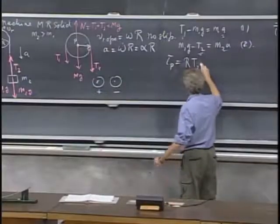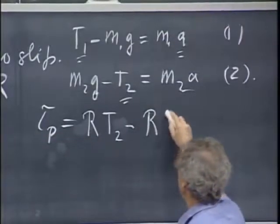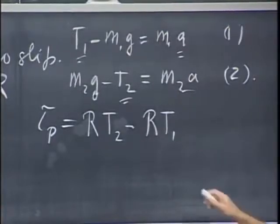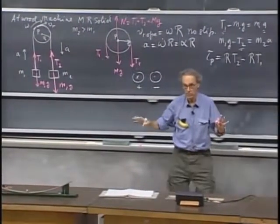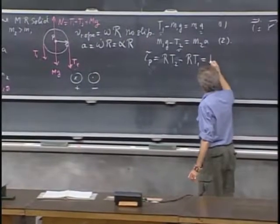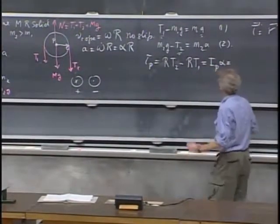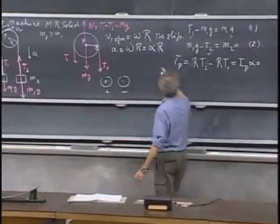equals the radius of that pulley times T2. That's the positive part, and the negative part is the radius times T1. Notice that this force and this force go through P and do not contribute to the torque. And that now equals the moment of inertia about that point P times alpha. But since we have no slip, alpha is a divided by r,